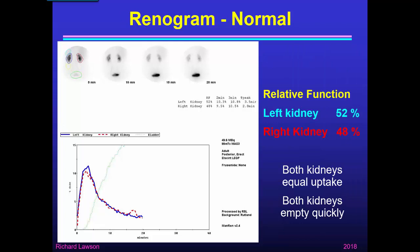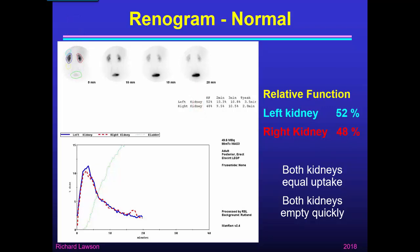This is what a normal renogram might look like. At the top we've got some representative images from the study showing what the gamma camera sees. Here we have a posterior view of the patient, and the amount of blackness in the image shows the amount of radioactivity detected, which is the amount of radiopharmaceutical. We can see the kidneys quite clearly early on, and the bladder at the end. Looking at the first image representing 5 minutes of the study, we can see there's plenty of activity in the left kidney and the right kidney — in fact equal amounts in each, representing equal function.